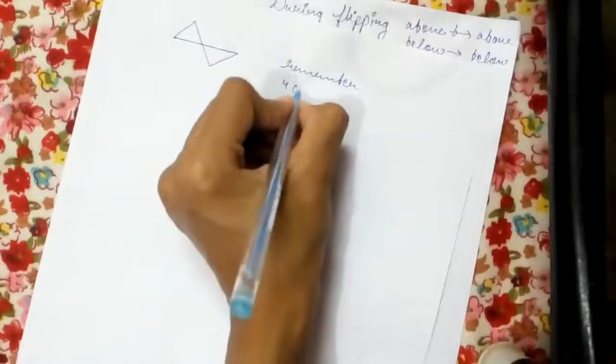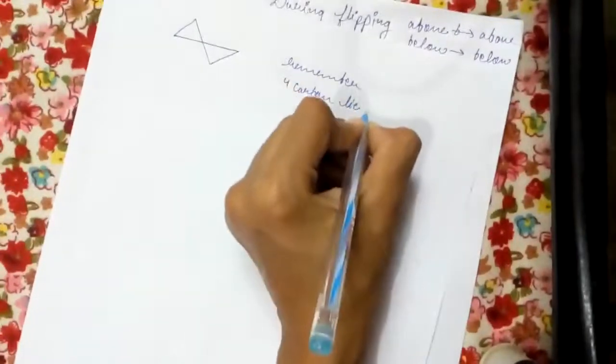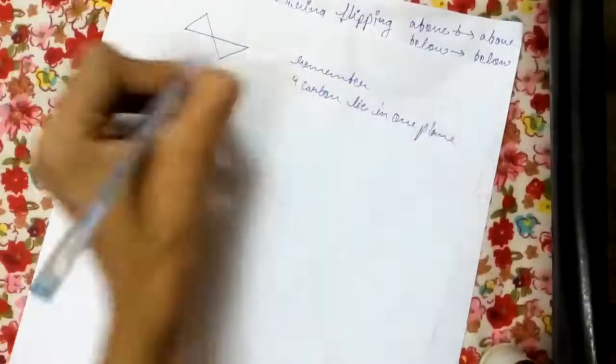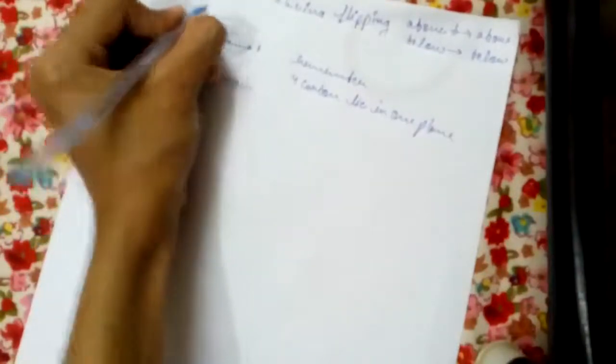During half chair, remember four carbons lie in one plane. This is our half chair. So let us number: one, two, three, four, five, and six. This is the easiest form of half chair.